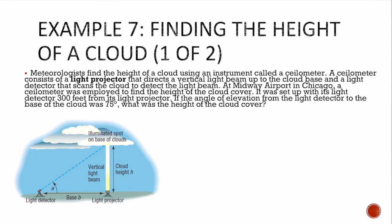So meteorologists find the height of a cloud using an instrument called a ceilometer. A ceilometer consists of a light projector that directs a vertical light beam up to the cloud base and a light detector that scans the cloud to detect the light beam. At Midway Airport in Chicago, never been there, a ceilometer was employed to find the height of the cloud cover.